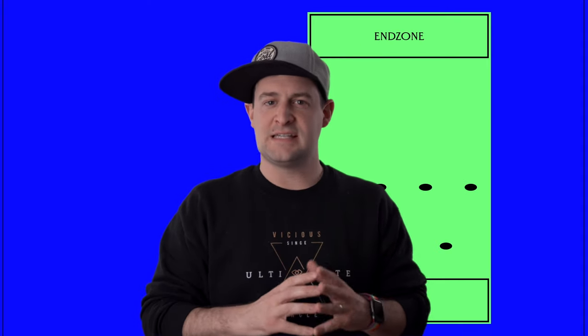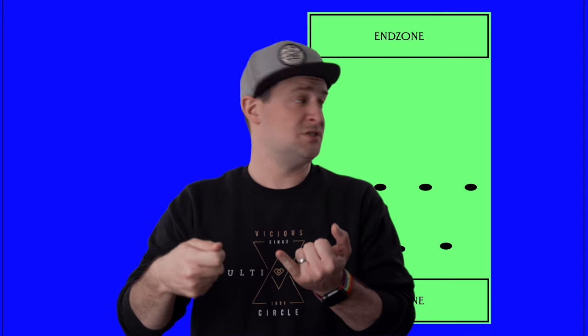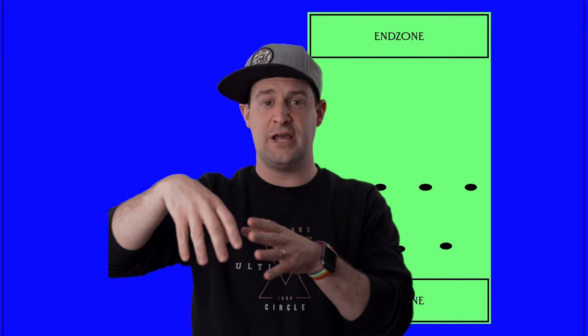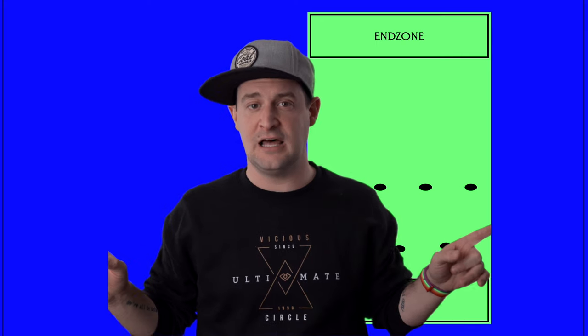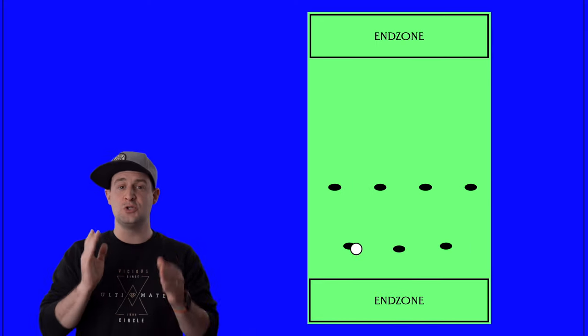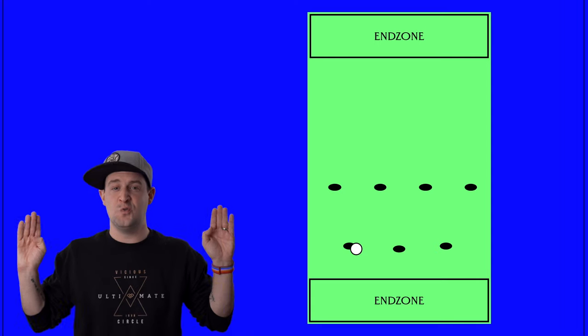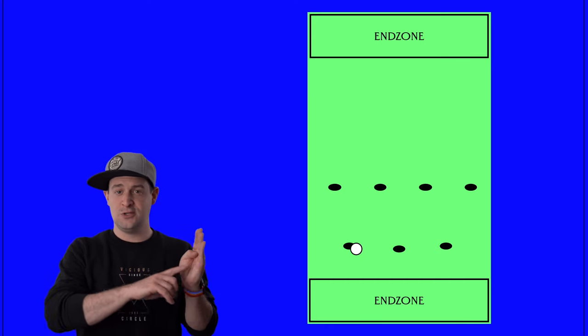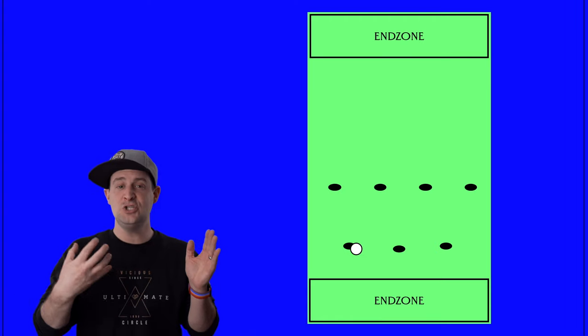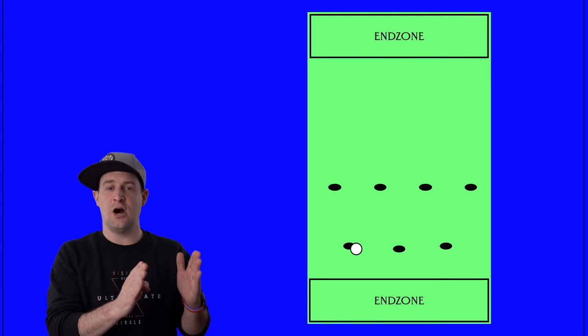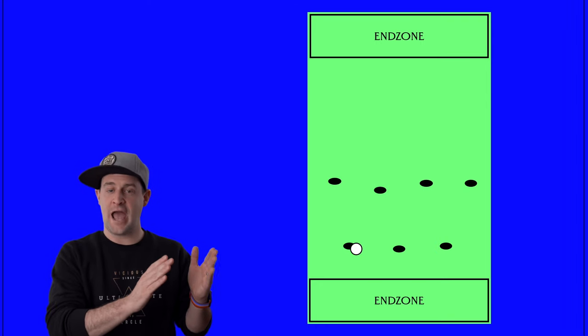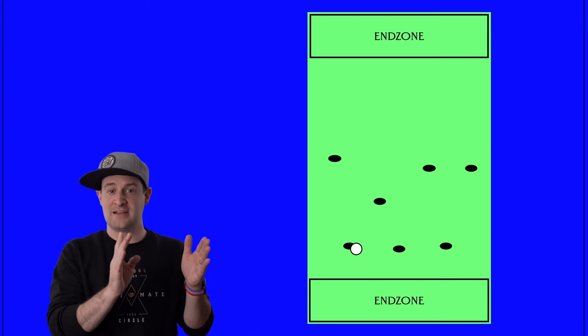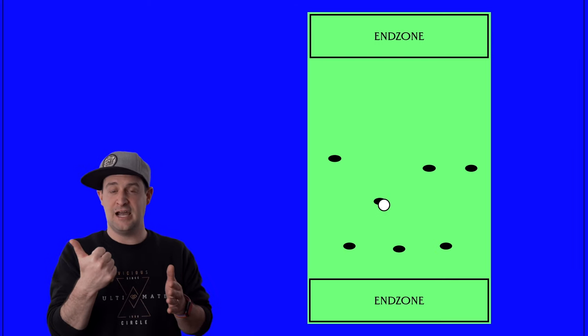Now, by contrast, when the disc gets swung to the sideline, whether that happens with a handler not having any options and they turn and they throw it to the reset handle, or the handler does throw it to a cutter and then the handler gets covered, so the cutter resets to one of the handles on the sidelines, regardless of how it happens, when the disc ends up on the sideline, you don't want your two poppers in the middle doing all the work and your two wings still pushing deep. You want to adjust because if the disc is on one sideline, it's pretty difficult to get a throw to the cutter who's on the opposite sideline. So in general, in these situations, we want the two cutters who are on the same side of the field as the disc to become more active. And again, we want the middle of those two cutters, who's more in field, more toward the middle, we want them to be more active because if we can get the disc to them, then we're off the sideline, which is better.